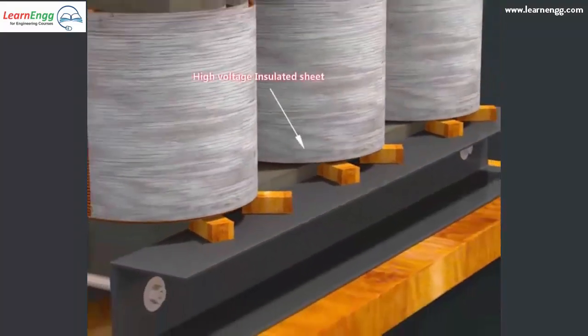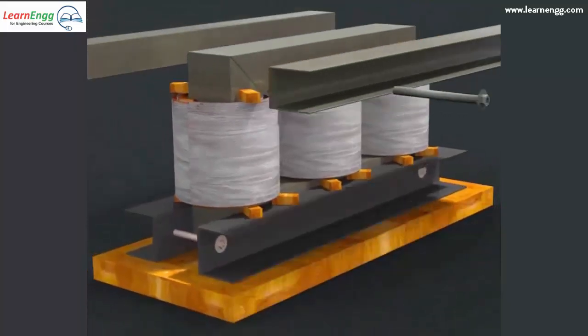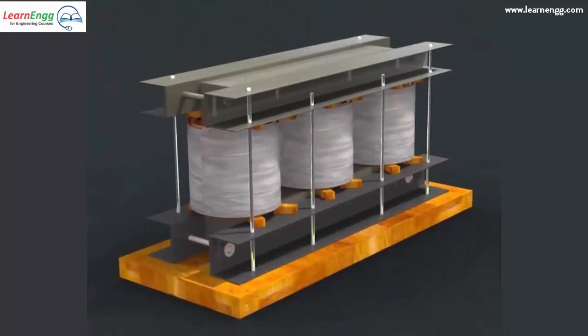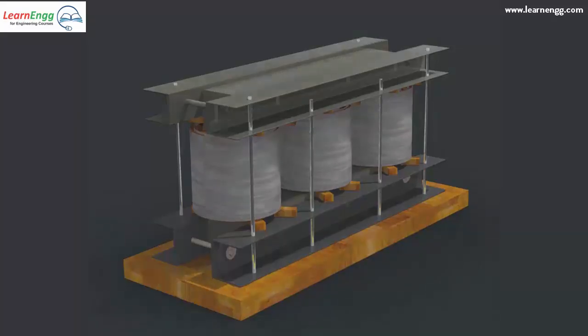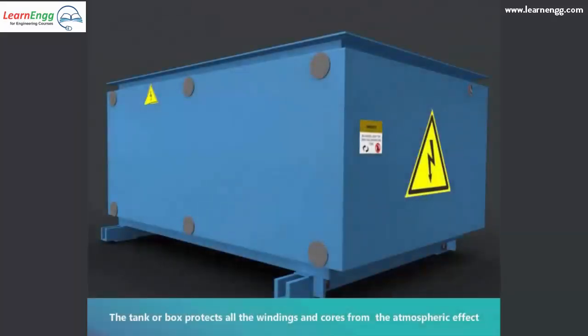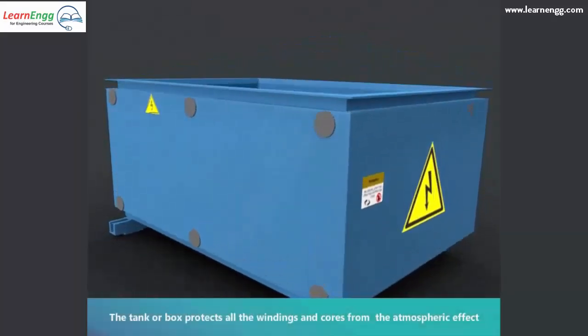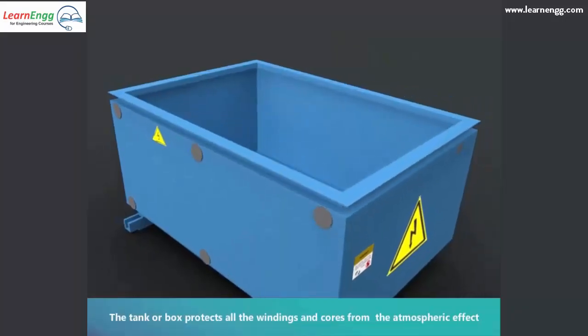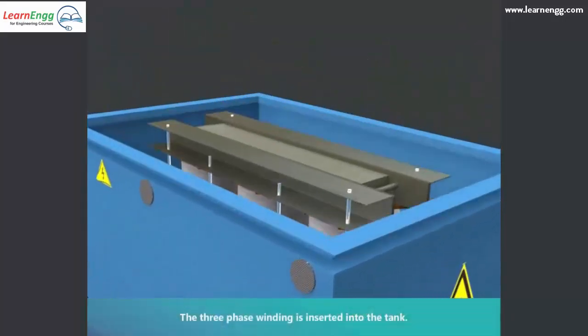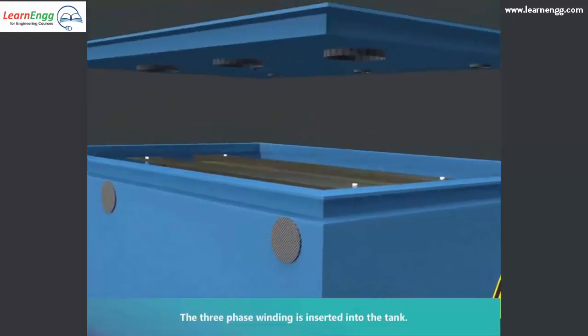High voltage insulated sheet. The tank or box protects all the windings and cores from the atmospheric effect. The 3-Phase winding is inserted into the tank.